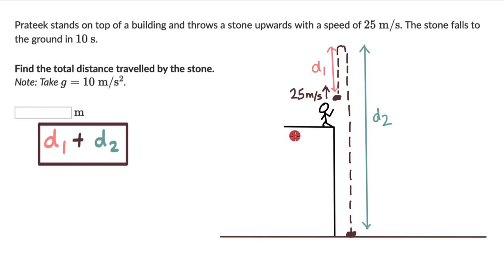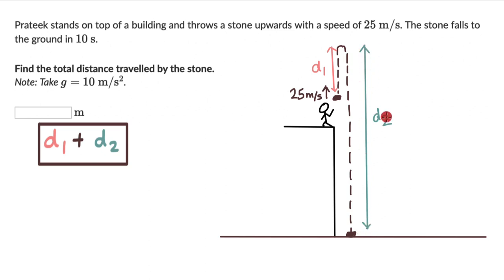We can approach this by breaking the motion into two parts. The first part is when Pratik throws the stone and it reaches the top height. The second part begins after it starts falling until it reaches the ground. We treat each part separately using equations of motion to figure out D1 and then D2. Let's list down all the variables for each part.